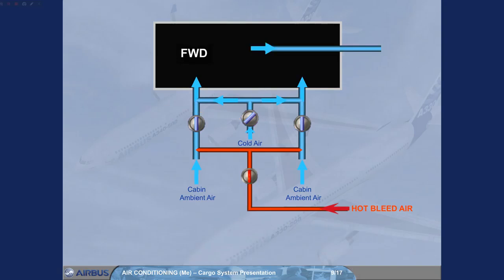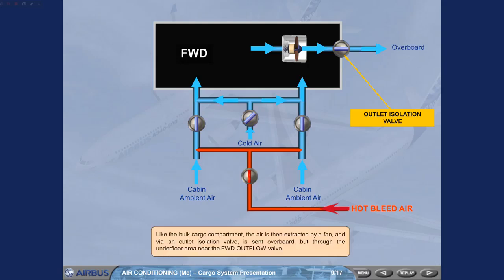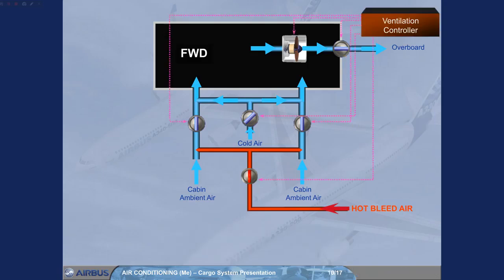The air is then extracted by a fan and, via an outlet isolation valve, is sent overboard through the underfloor area near the forward outflow valve. Note: if installed, compartment heating is not available when the forward cargo door is open.